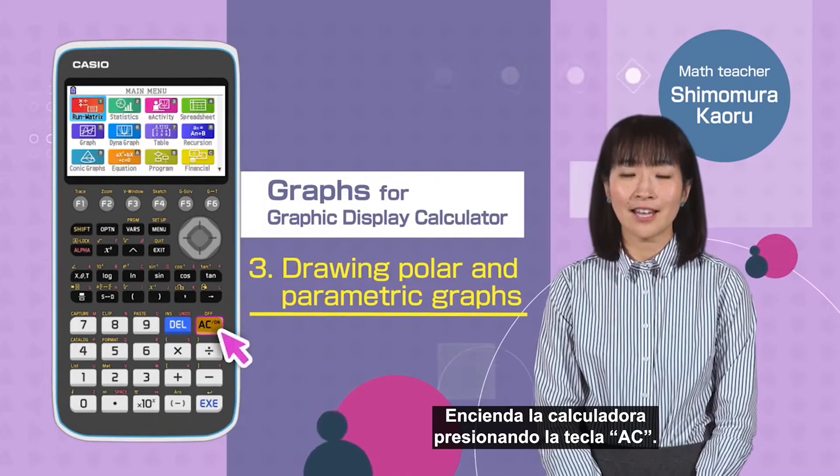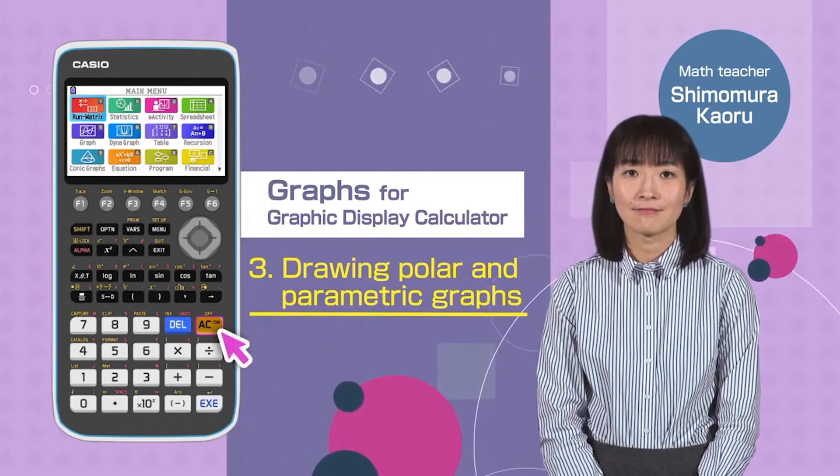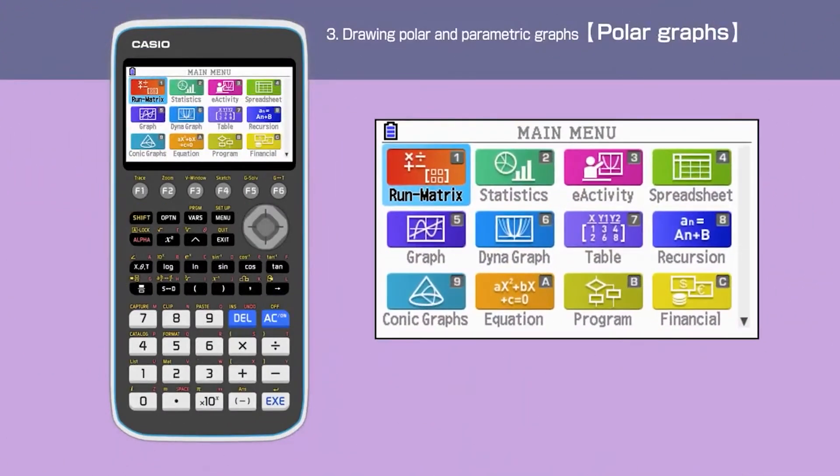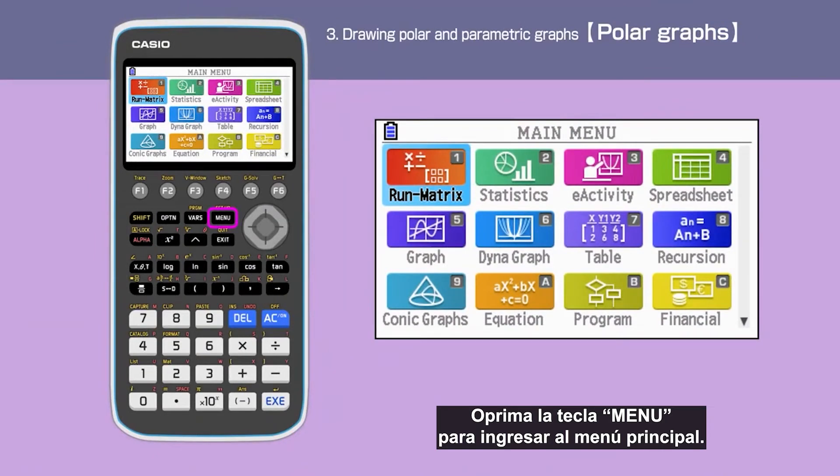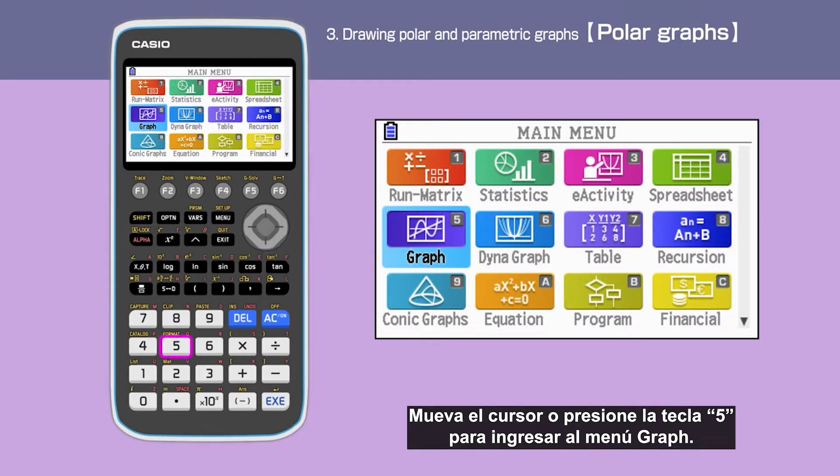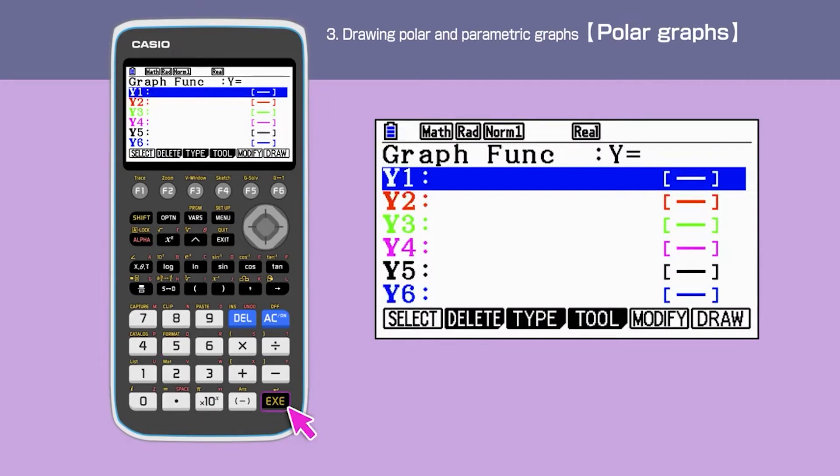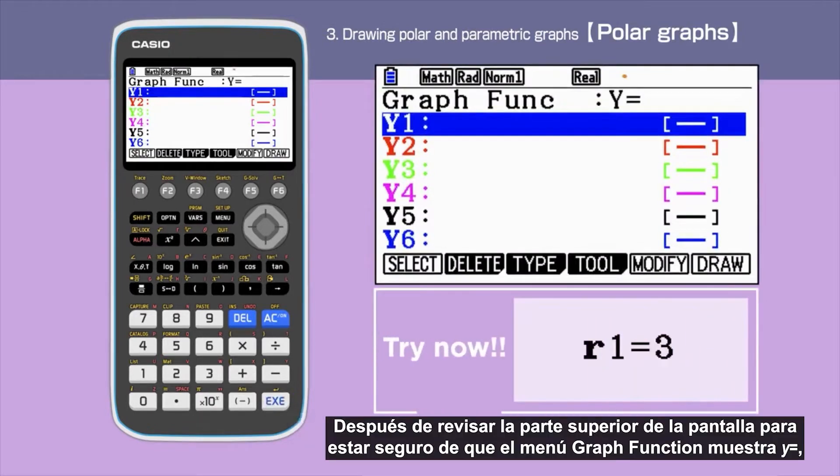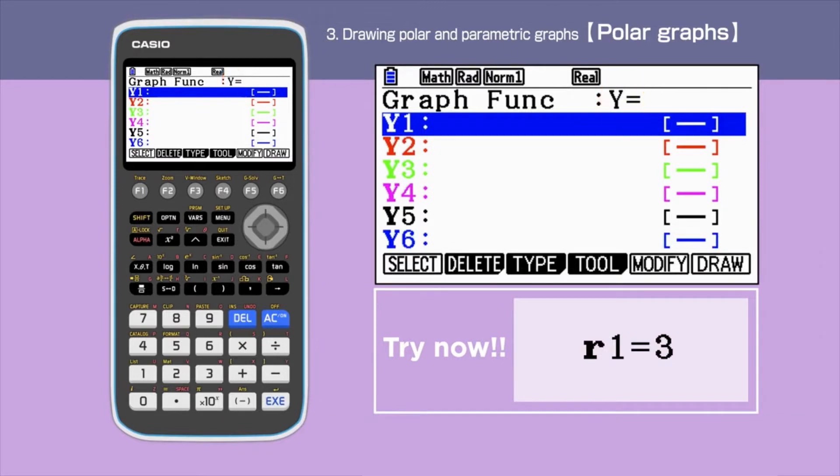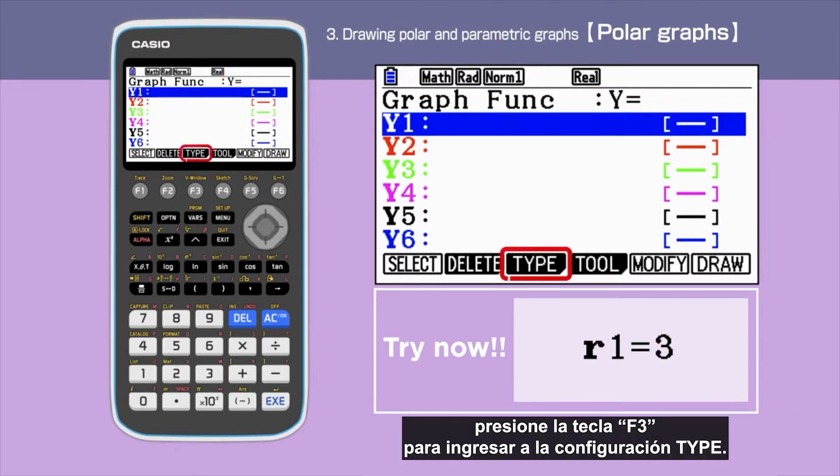Switch on your calculator by pressing the AC button. Press the menu button to open the main menu. Then move the cursor or press 5 to select the graph menu. After making sure the graph function shows y equals, press F3 to select the type command.